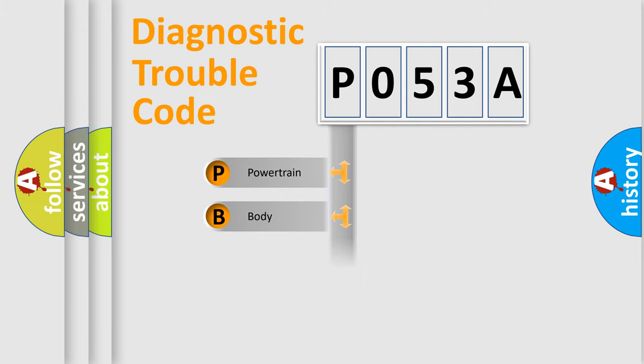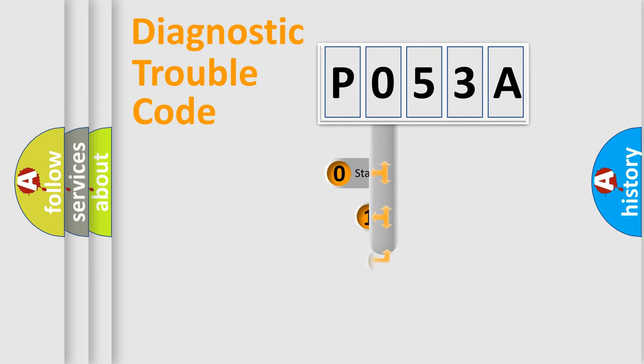Powertrain, Body, Chassis, Network. This distribution is defined in the first character code.